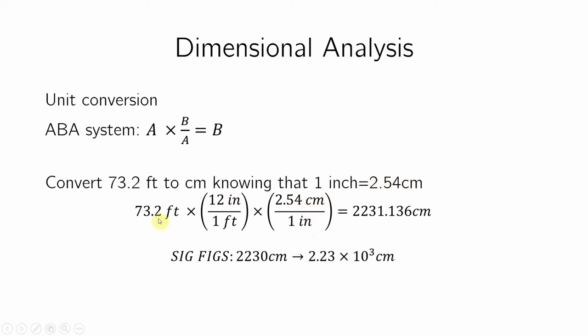So I punch into the calculator: 73.2 times 12 times 2.54, divided by 1, divided by 1. And to conform to sig figs, I only need 3, so it will be 2,230 centimeters, or 2.23 times 10 to the third.